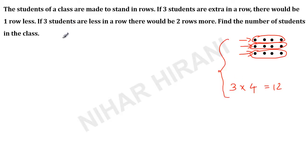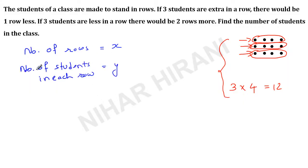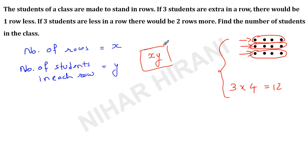Here, let us say the number of rows is x and the number of students in each row is y. So we have 2 important pieces of information: number of rows and number of students in each row. The total number of students will be x times y. I think you are clear till here — now the question will be very easy for you.